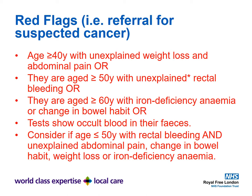Red flags — signs that should prompt referral under the two-week wait rule for suspected cancer — include: age greater than 40 with unexplained weight loss and abdominal pain; age 50 and above with unexplained rectal bleeding; age greater than 60 with iron deficiency anemia or a change in bowel habit; tests showing occult blood in feces; and consider referral if age less than 50 with rectal bleeding and unexplained abdominal pain, change in bowel habit, weight loss, or iron deficiency anemia.